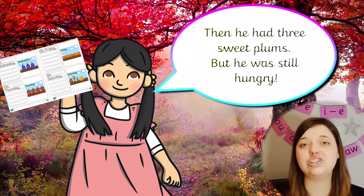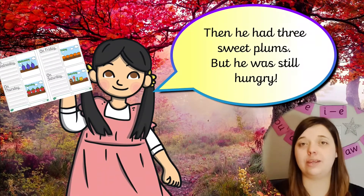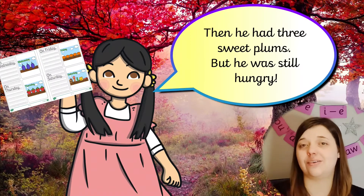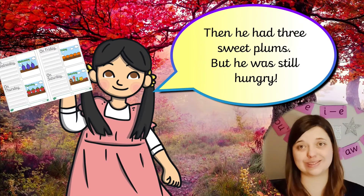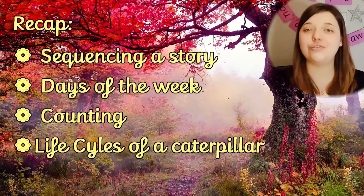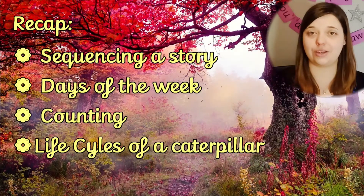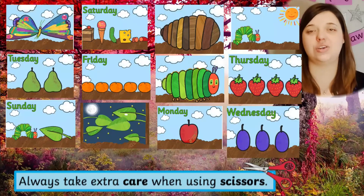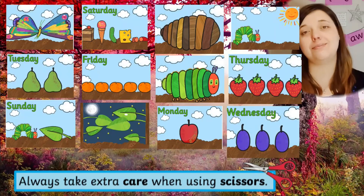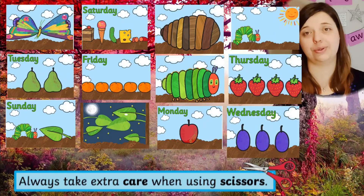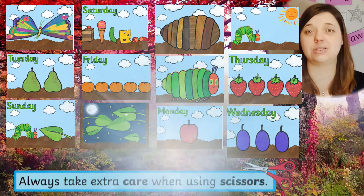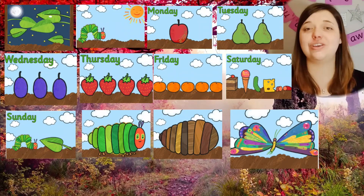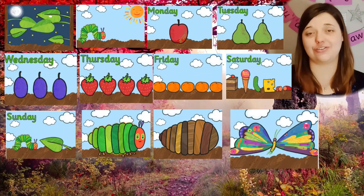To simplify, ask children to verbally retell the story using the given sentence starter prompts. For a fun home learning recap, you could carefully cut out the illustrations and mix them up. Ask your child to put the pictures back in the right order to show their understanding of the story.